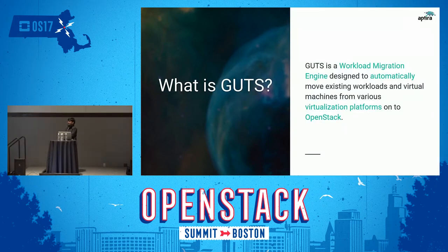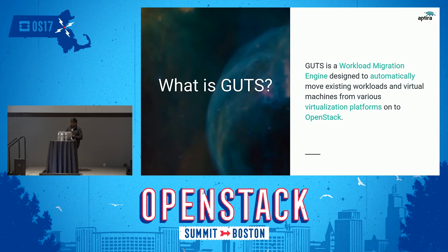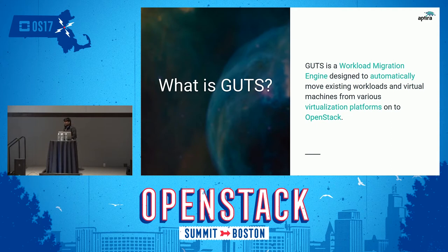GERDs is a workload migration engine that automatically moves resources from traditional clouds to OpenStack. Those traditional clouds can be VMware, AWS, Hyper-V, or anything. GERDs provides an automated, robust, and efficient way to migrate instances and resources — not just instances, but any resource from any cloud to any cloud. In this talk I'm concentrating on OpenStack as the destination, but GERDs also supports migrating from OpenStack to VMware and OpenStack to AWS.